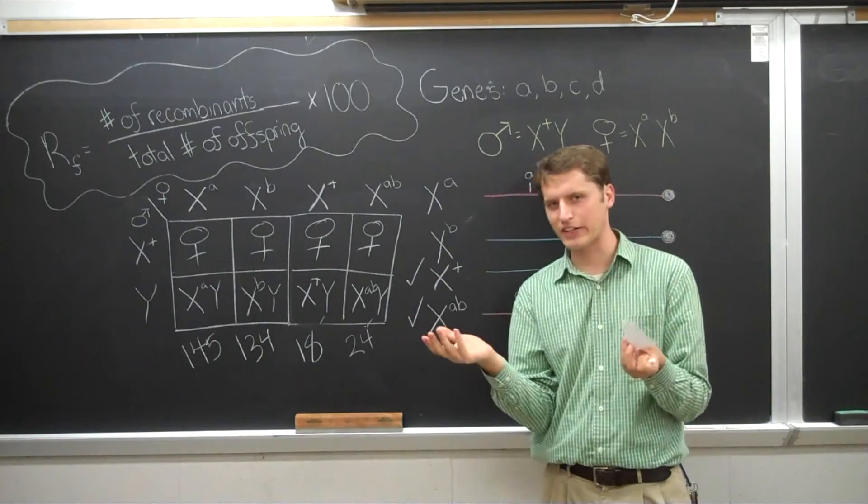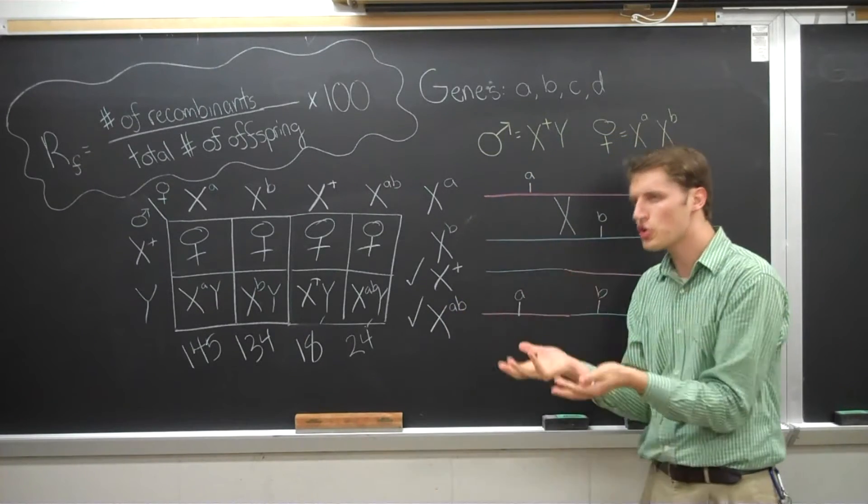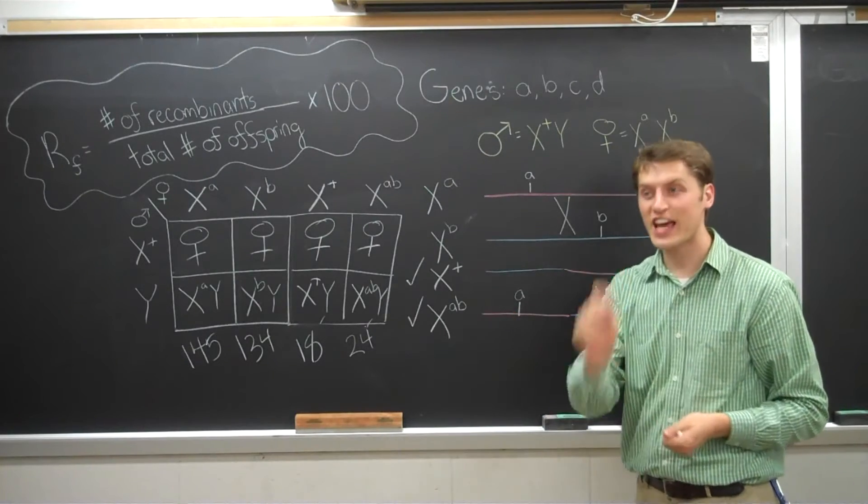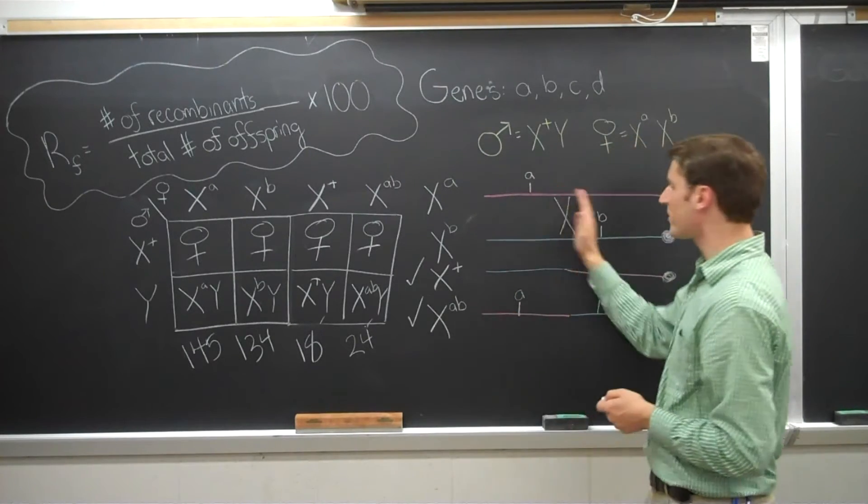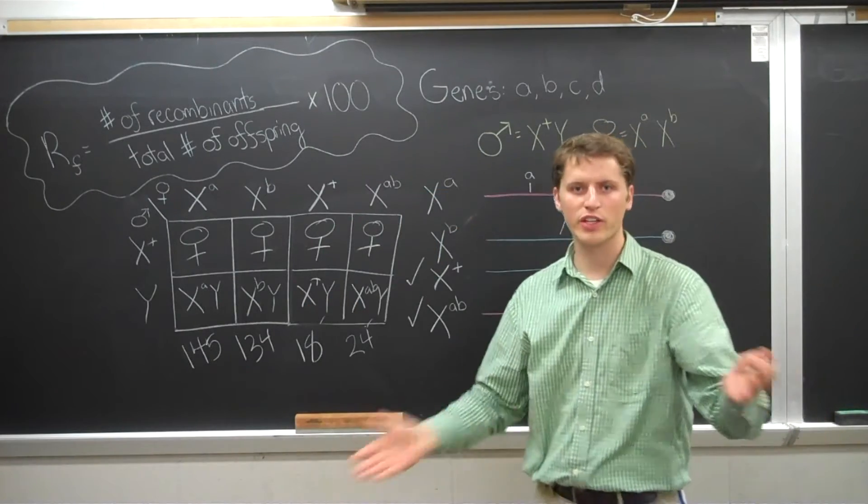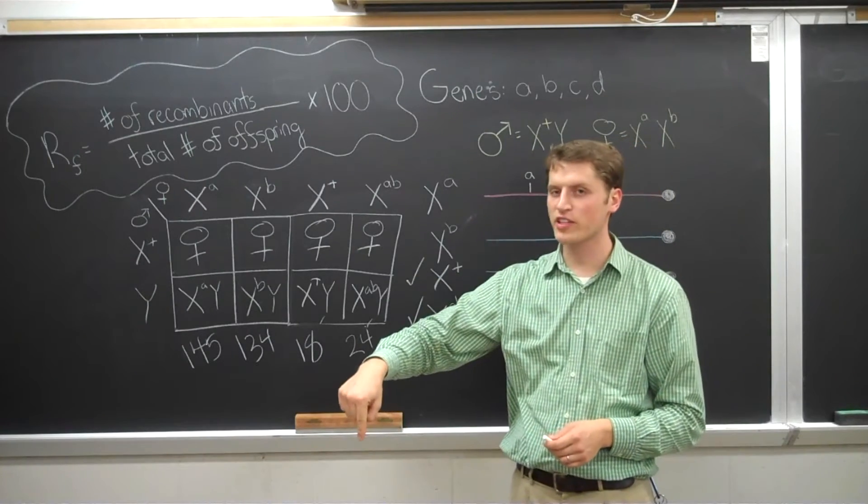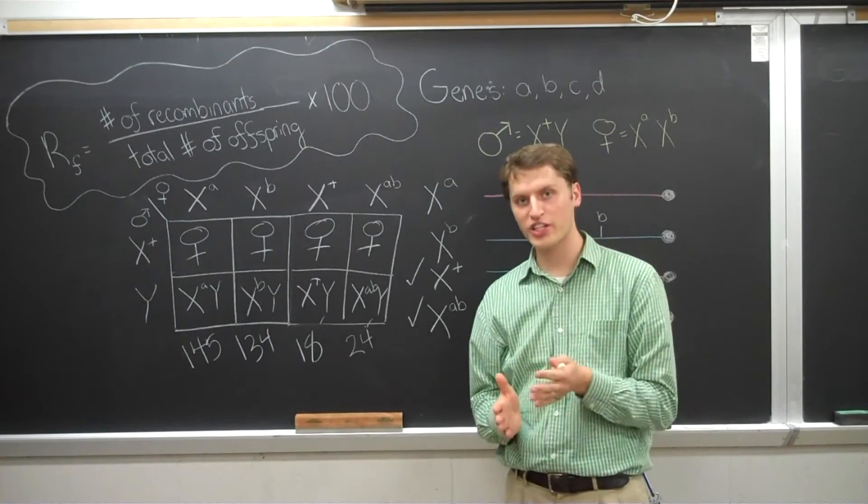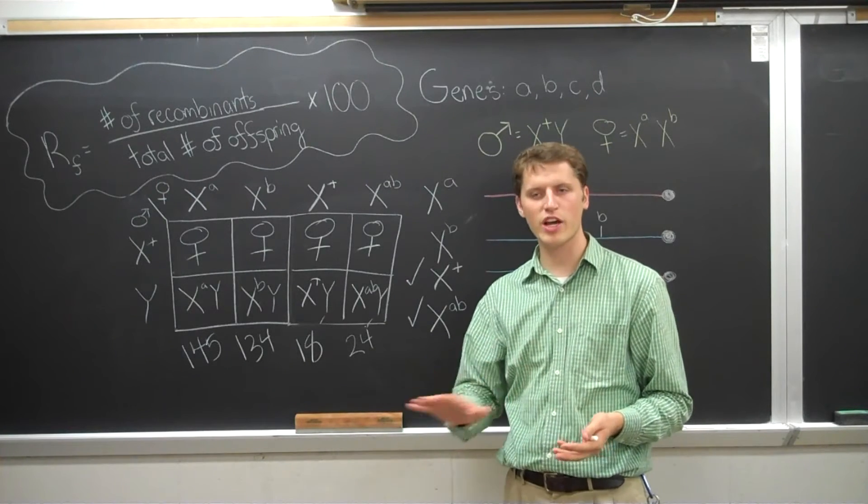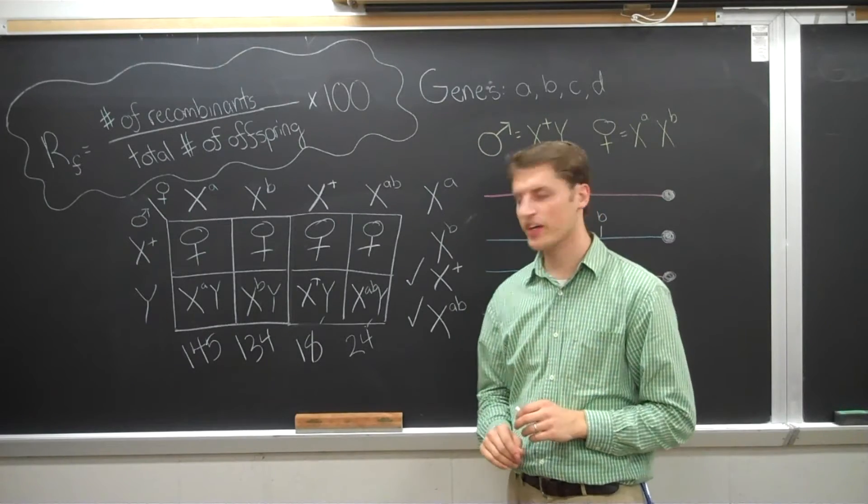The whole idea here is, this is important. The idea is, the more, the closer two genes are together, the less frequently recombination will occur between them. That makes sense. There's not as much room between them for recombination to occur. So the lower the recombination frequency, the closer together the genes are. And that's how we will use those recombination frequencies to build a map showing the relative locations of these genes.